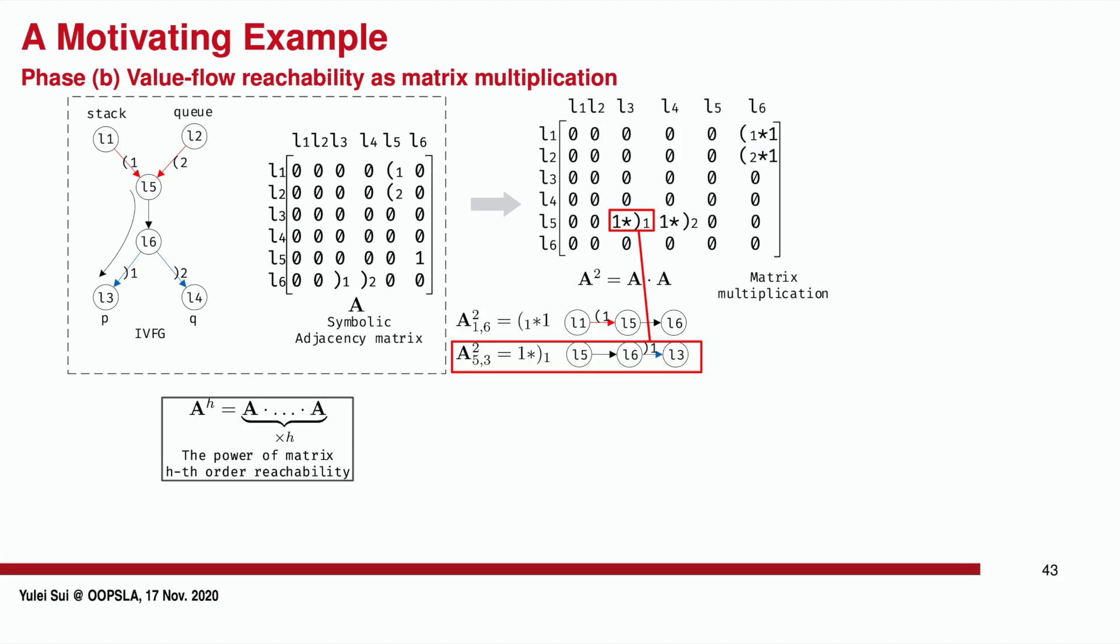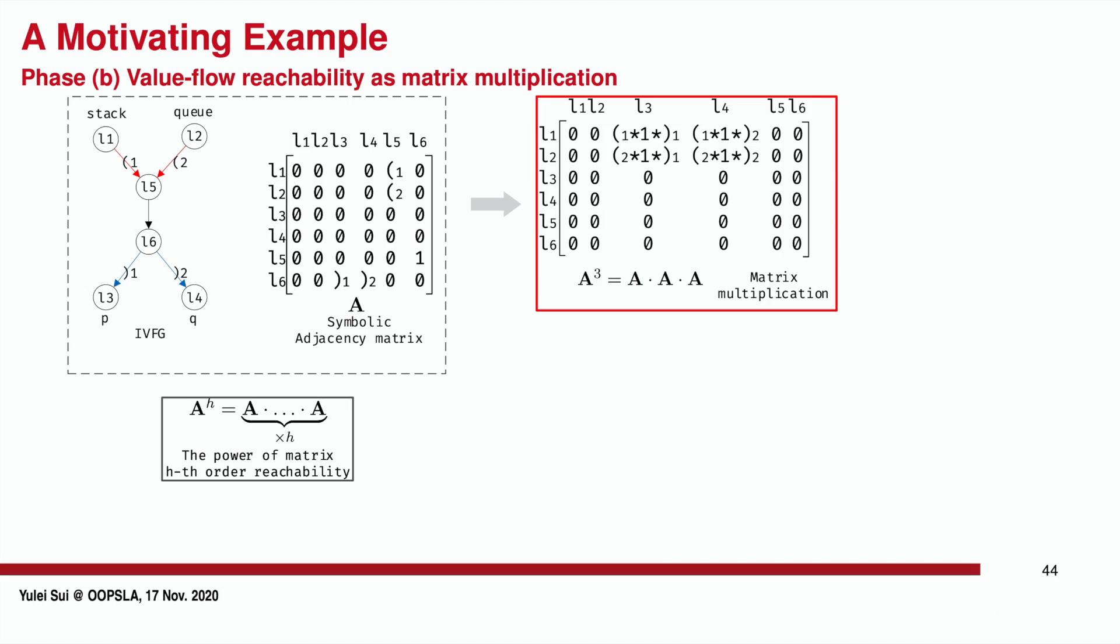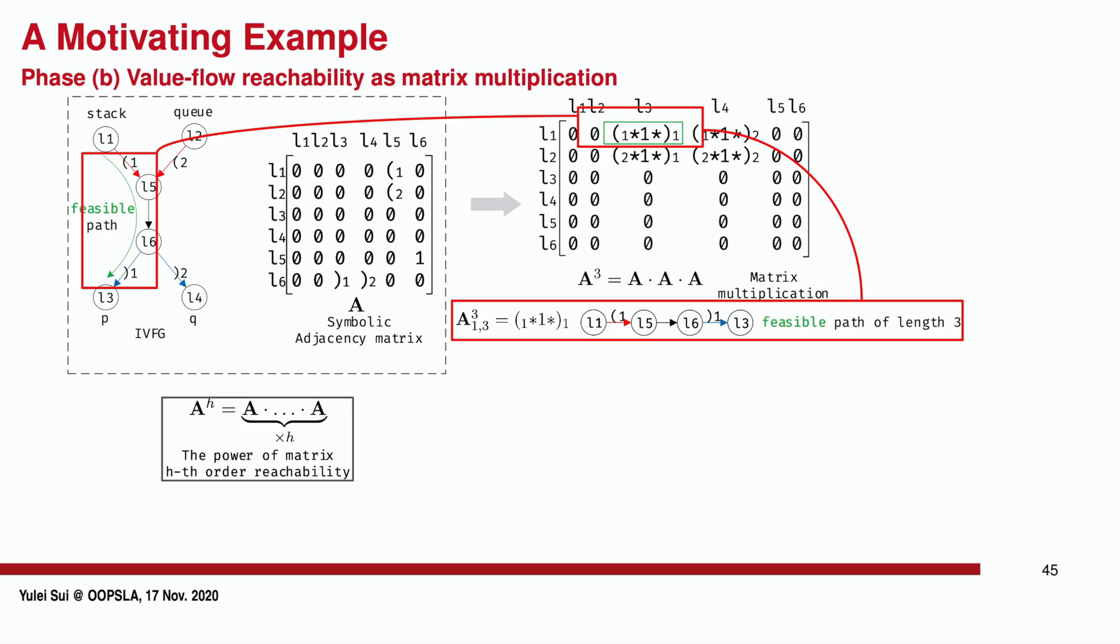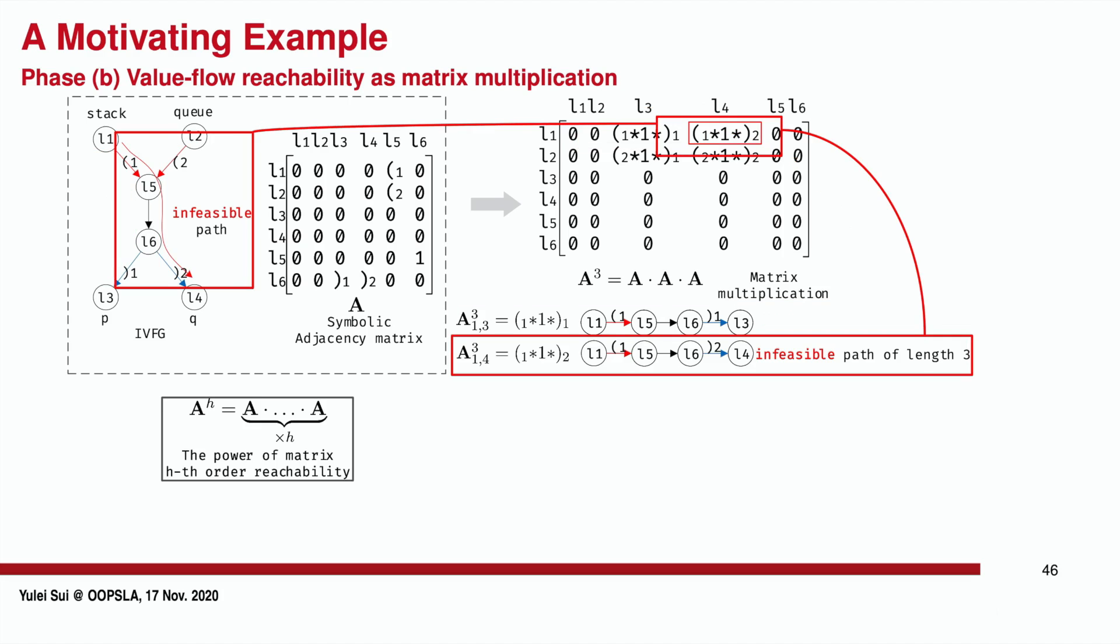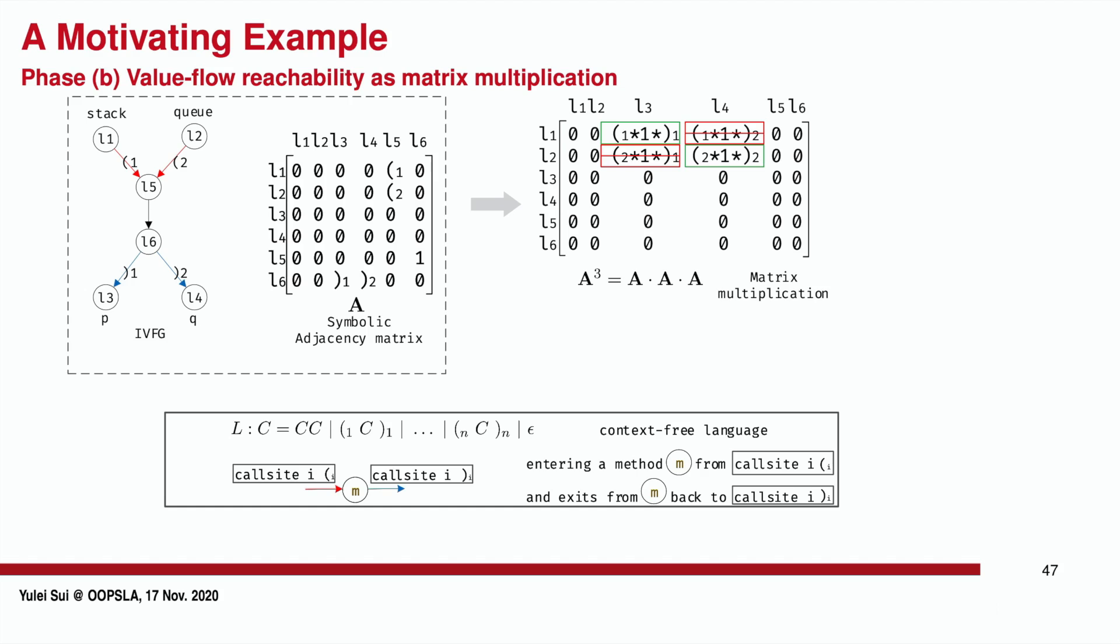Similarly, A-squared 5,3 represents a path from L5 to L3. Likewise, for the third power of A, each element in this matrix represents a potential feasible path of length 3. For example, A-cubed 1,3 represents a path of length 3 from L1 to L3, which is a feasible interprocedural path. While A-cubed 1,4 signifies a path from L1 to L4, which is an infeasible path implying that pointer Q can never refer to the stack object.